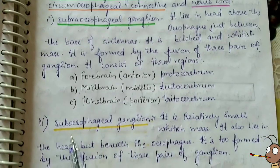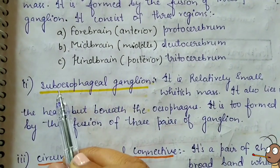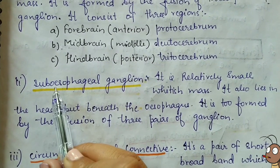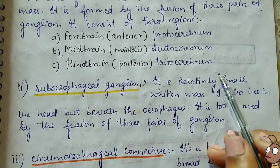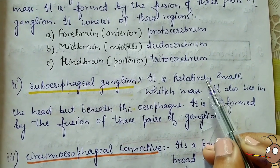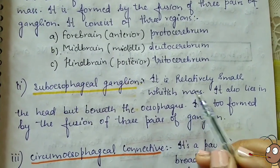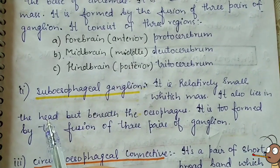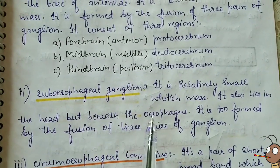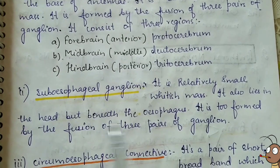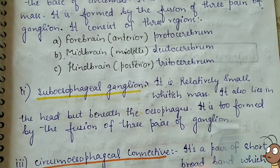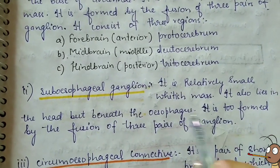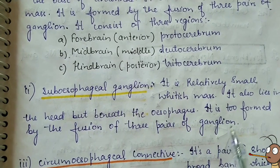Next in the central nervous system is the subesophageal ganglion. It is smaller than the supraesophageal ganglion and is a whitish mass located in the head beneath the esophagus. It is also formed by the fusion of three pairs of ganglia.